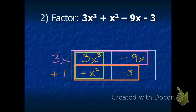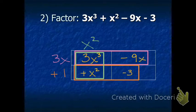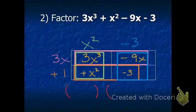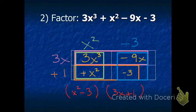Now the vertical binomials. For positive 3x to the third and positive x squared, the greatest common factor is positive x squared. For the last binomial, negative 9x and negative 3 — again, they're both negative, so we factor out a negative number. The greatest common factor is negative 3. So our binomials are x squared minus 3 and 3x plus 1. We lead with x squared minus 3, then finish with 3x plus 1. That's the second example.